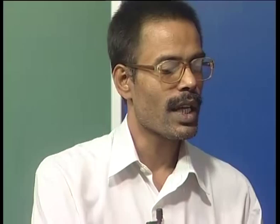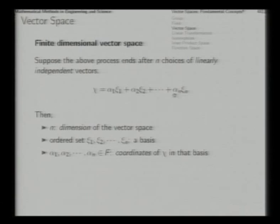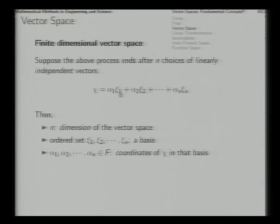These vectors ψ₁, ψ₂, ψ₃, ..., ψₙ — the n choices we picked up — form an ordered set. They form a basis to represent all vectors in the vector space. For a particular vector χ, the corresponding coefficients α₁, α₂, α₃, ... turn out to be the coordinates of the vector χ in that basis.